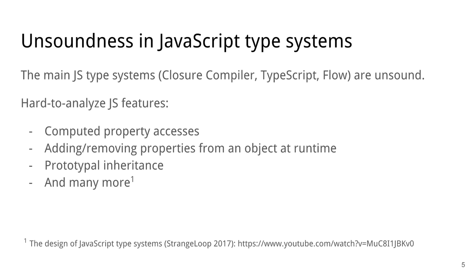And there's a good reason that all of us chose unsoundness. And it's because JavaScript is a very dynamic language, and it has features like computed property accesses, or objects whose size grows and shrinks at runtime, or inheritance hierarchy that can change at runtime, and so on. So in order to have any hope of analyzing the language statically, we make some compromises.